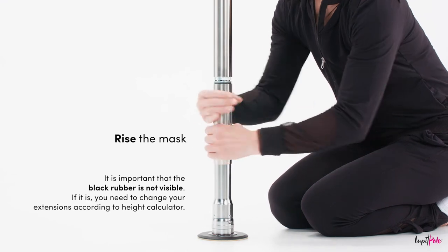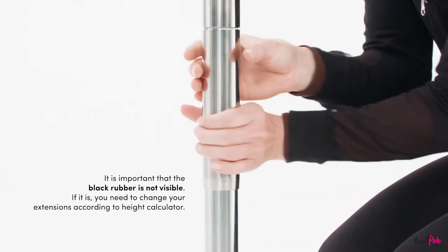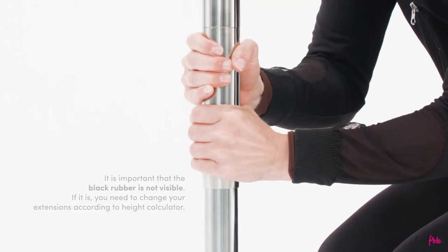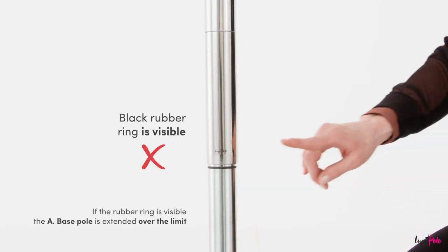It is important that the black rubber is not visible. If it is, you need to change your extensions according to the height calculator.